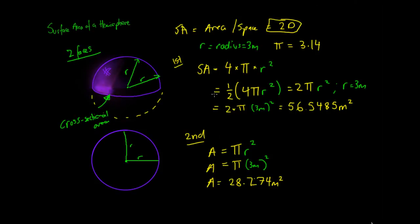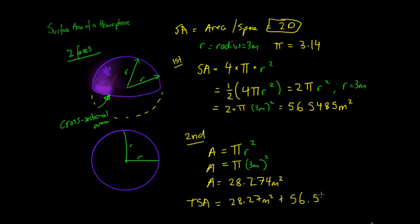We now have the area of both faces. The rounded part is 56.54 meters squared and the bottom circle is 28.274 meters squared. To calculate the total surface area of the hemisphere, we add 28.27 and 56.54, which gives us approximately 84-point-something meters squared. That is how you work out the surface area of a hemisphere.